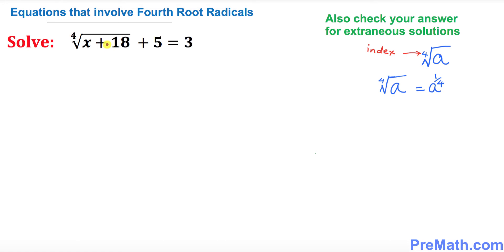Now let's solve this equation. The first thing we need to do is isolate the radical, so we subtract 5 from both sides. The 5 and negative 5 cancel out, so we end up with the fourth root of x plus 18 equals negative 2.